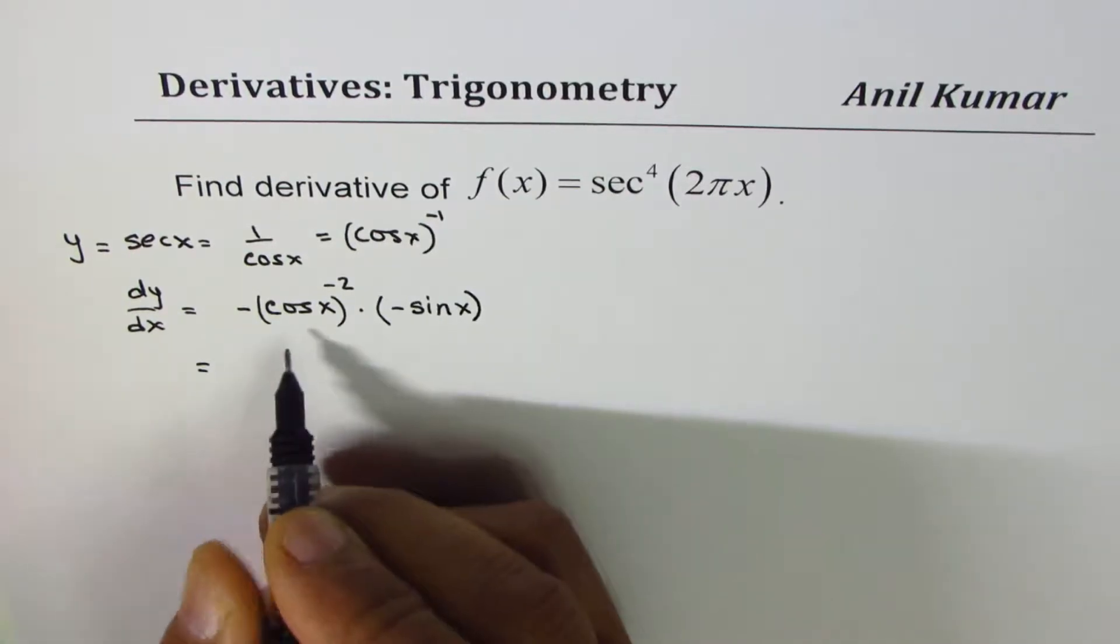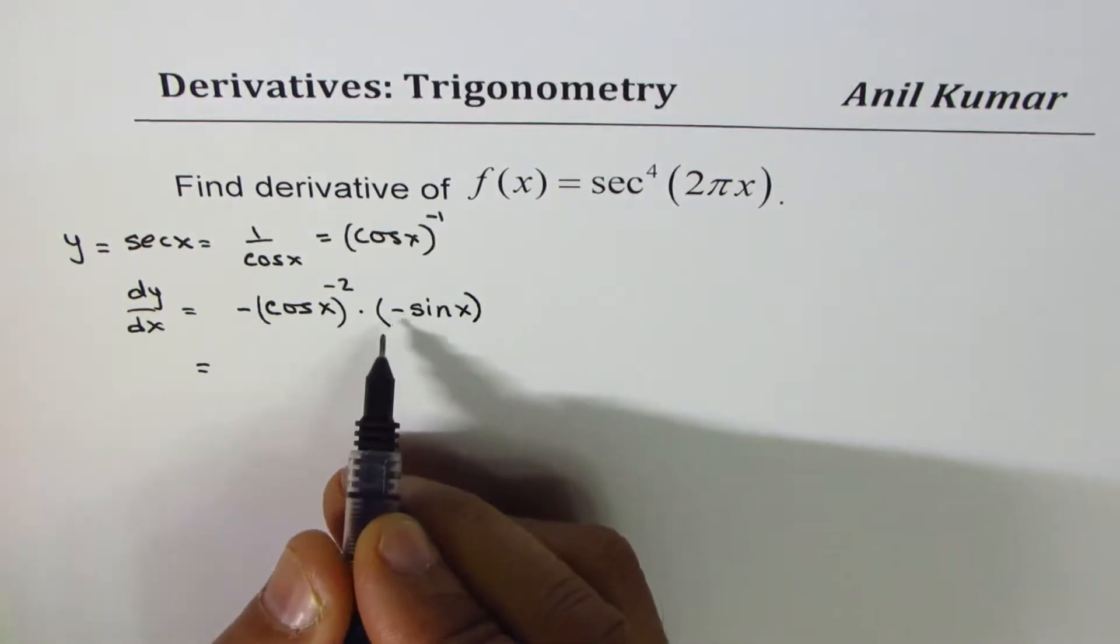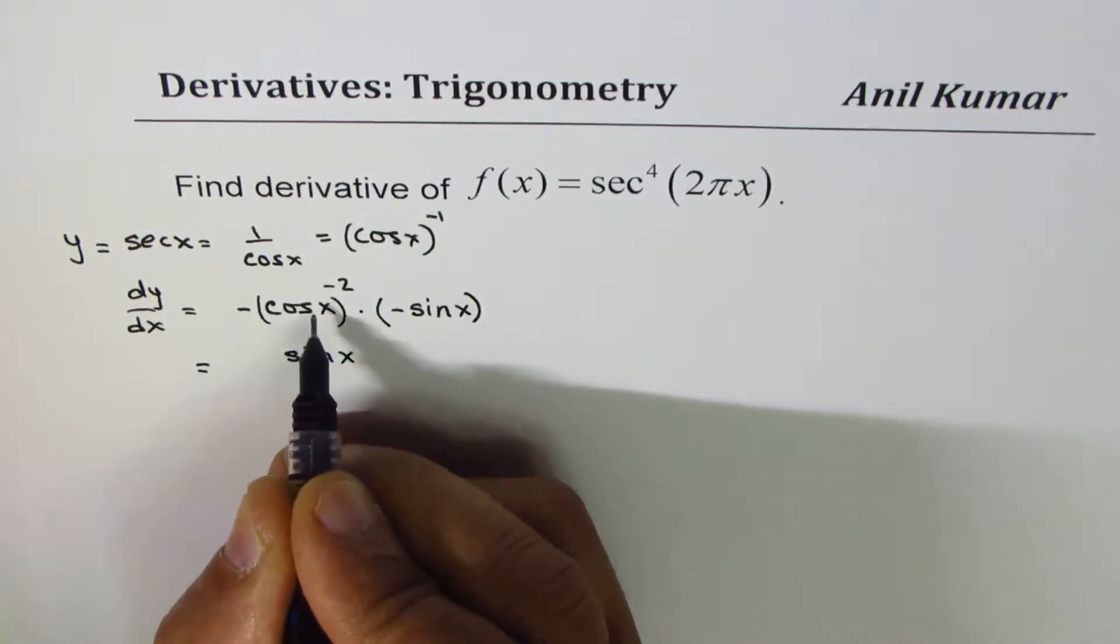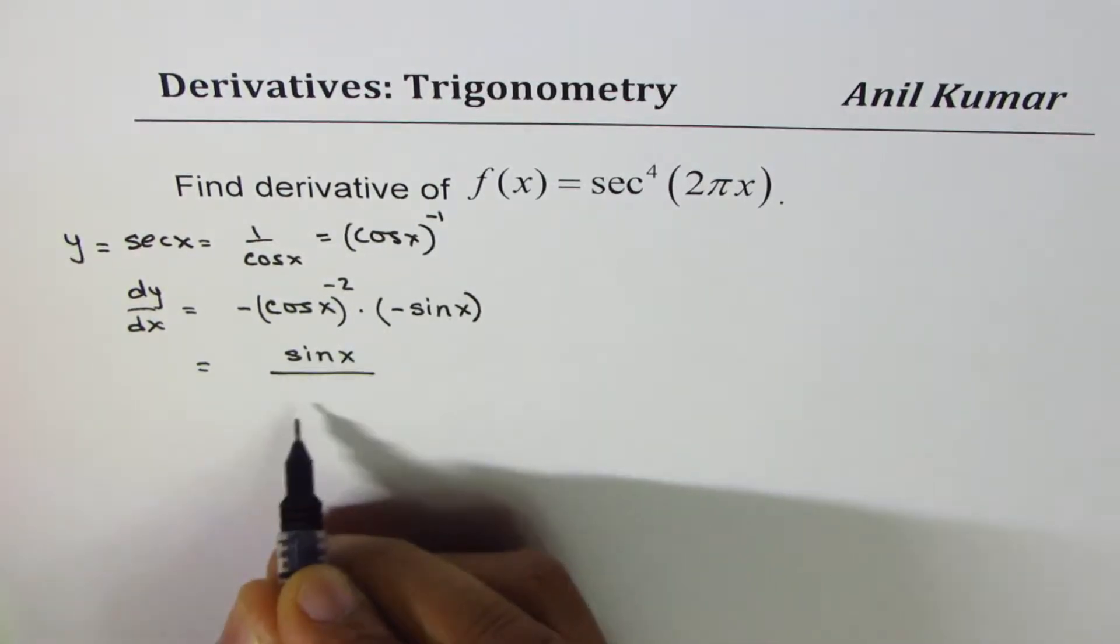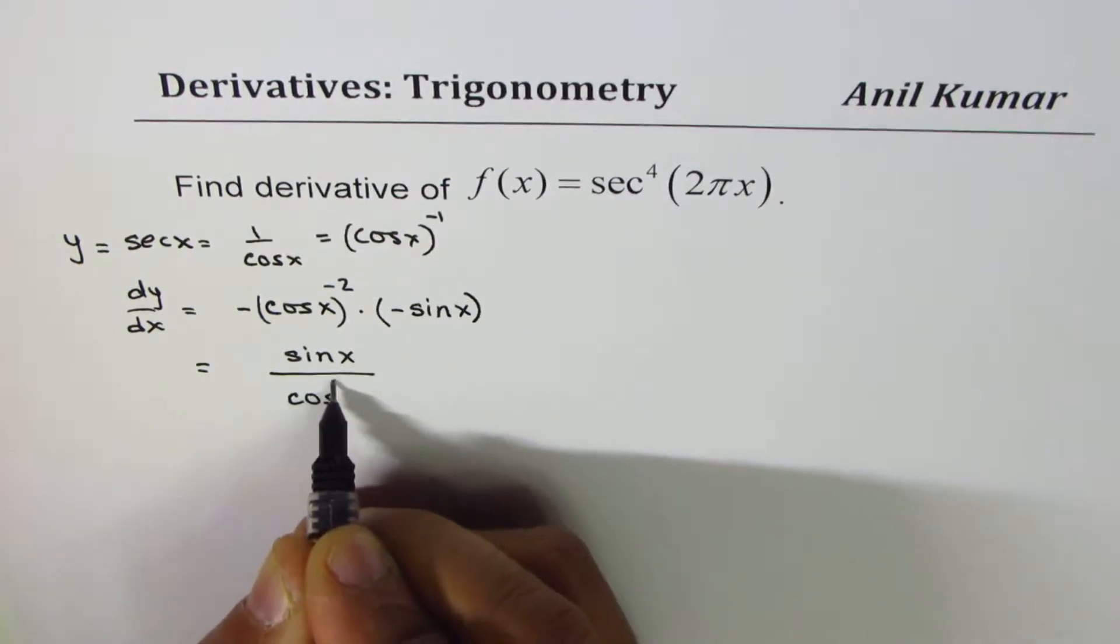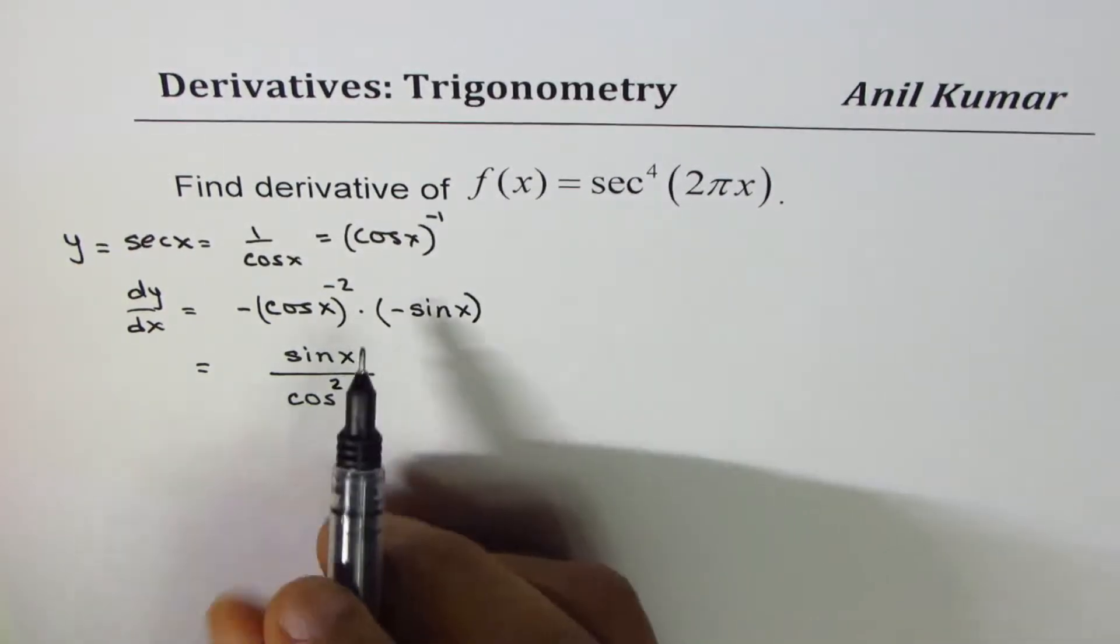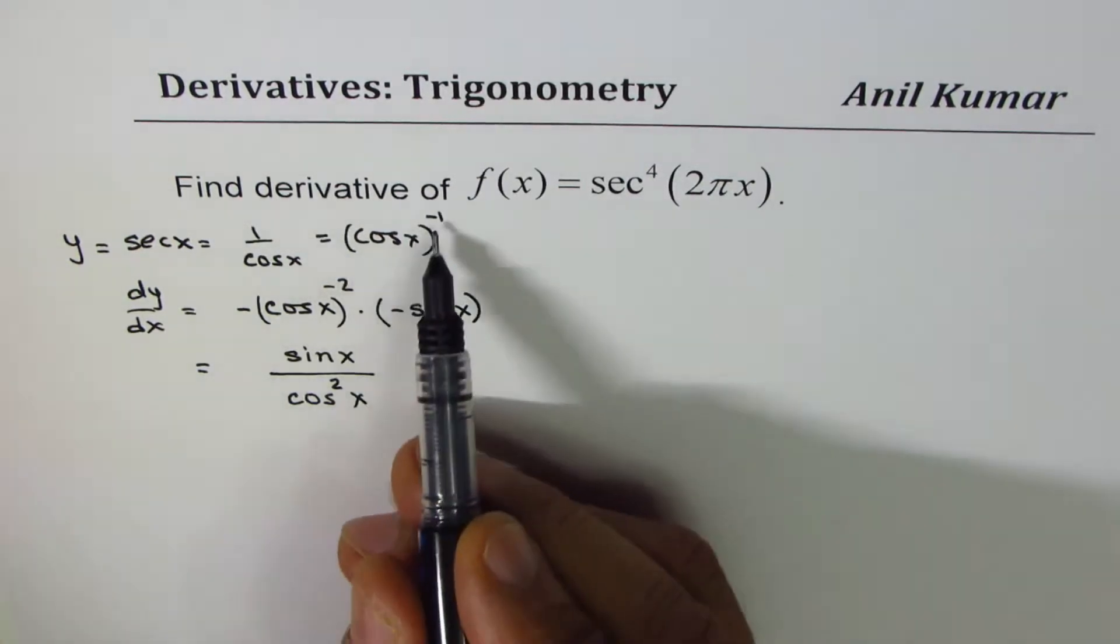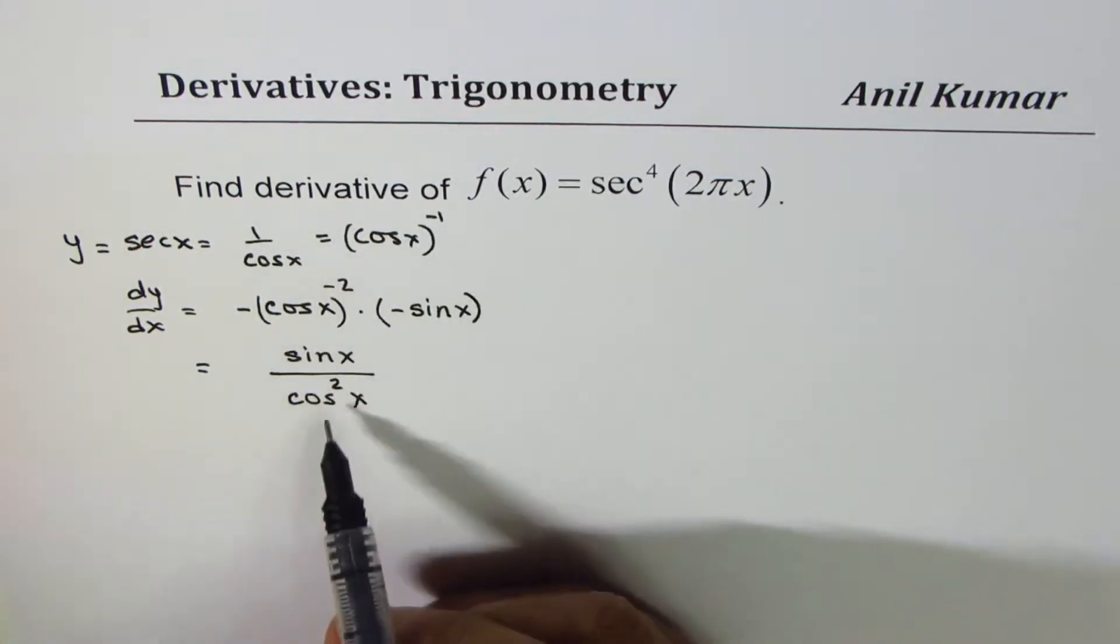So we could rewrite this as - this minus and minus makes it plus. So we get sine x over cos to the power of minus 2, or better written as sine x over cos square x. I purposely wrote it like this so it becomes very clear how the power rule has been applied.